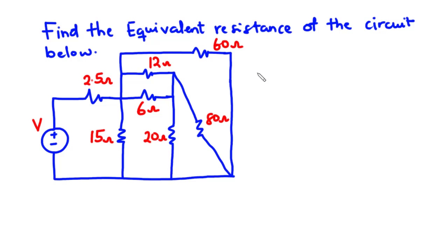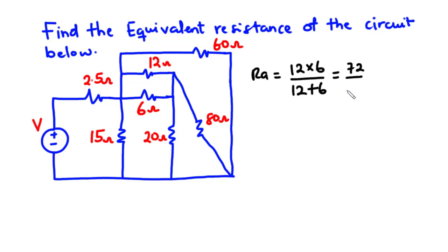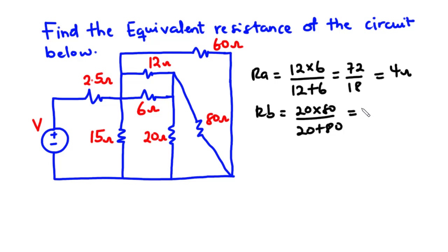Let Ra be the combined resistance for the 12-ohm and 6-ohm resistors. Because they are connected in parallel, we multiply the two values and divide by their sum: 12 times 6 divided by 12 plus 6, which gives 72 over 18, so Ra equals 4 ohms. Let Rb be the combined resistance for the 20-ohm and 80-ohm resistors: 20 times 80 divided by 20 plus 80 equals 1600 over 100, so Rb equals 16 ohms.